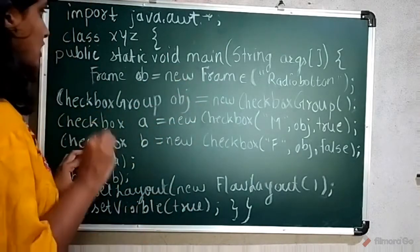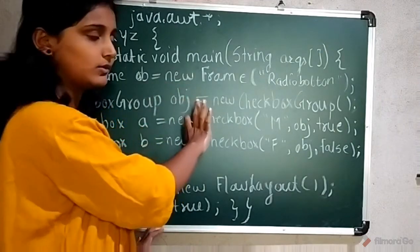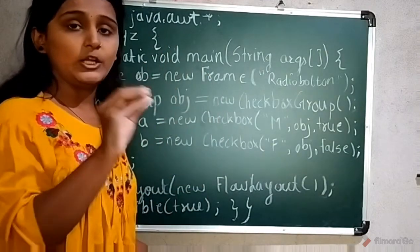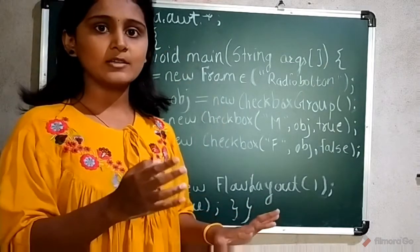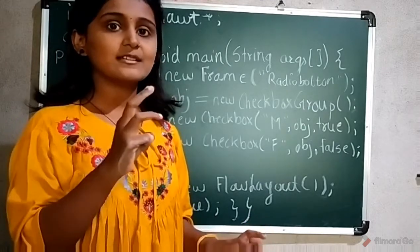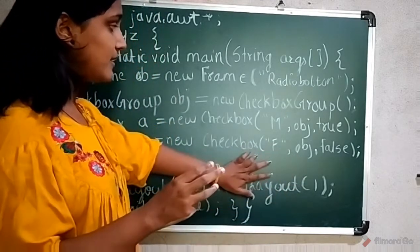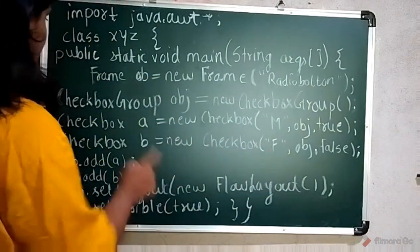In these three lines we are going to create the radio button using checkbox group. In the checkbox tutorial we saw that the last constructor of checkbox, using this we are going to create the radio button.